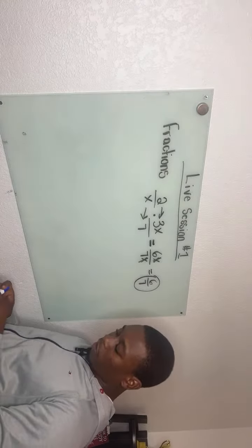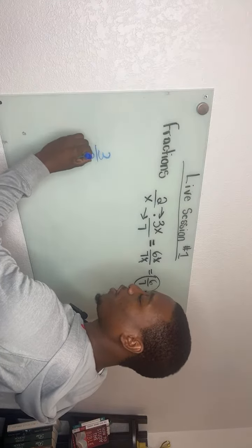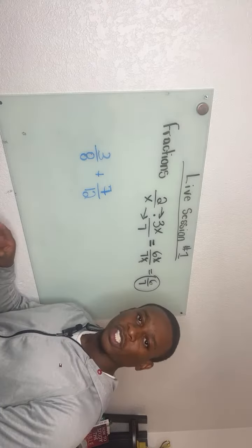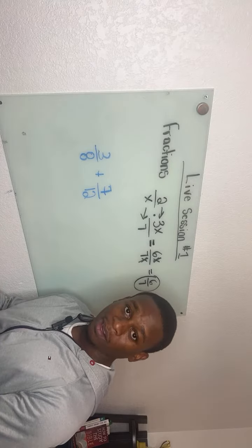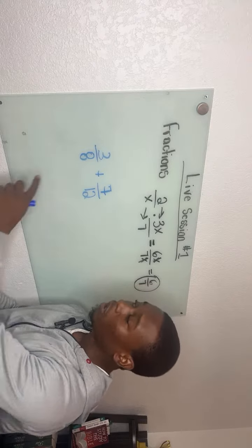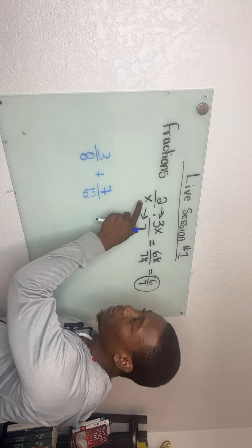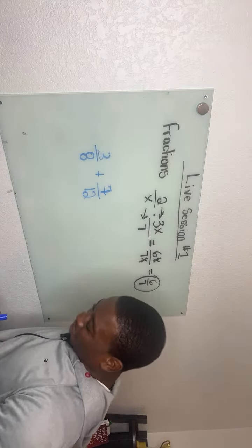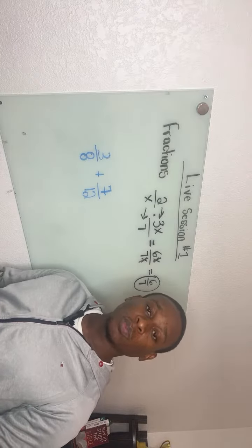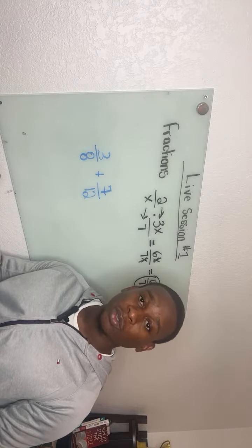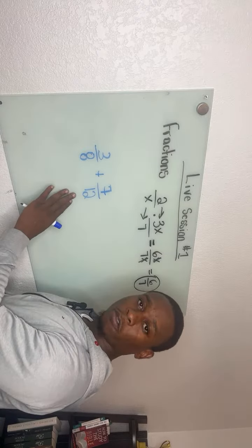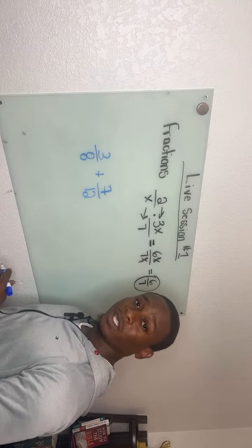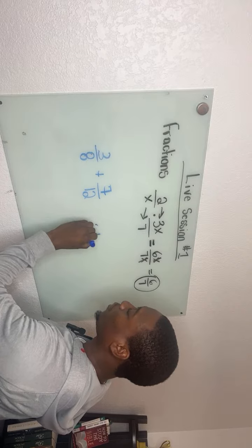So we have the problem three over eight plus seven over twelve. Remember, these are the basics. We know that we cannot add or subtract fractions if they do not have the same denominator. If we're multiplying it doesn't matter, but when we're adding and subtracting we have to have the same bottom number. So I'm thinking about all the multiples of eight: 8, 16, 24, 32, 40... and then 12: 12, 24, 36, 48. A common denominator for both of these is going to be 24.